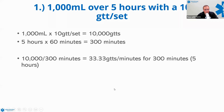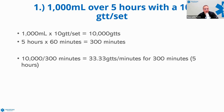Now, 33.33 drops per minute is not incredibly feasible, but that's the math. We cannot give 0.33 of a drop, so we either need to round up or round down when we come up with a decimal. In this case, 33.33 — since it is less than 33.5 — we round down. Anything above 0.5 rounds up; anything below 0.5 rounds down. So we give 33 drops per minute for 300 minutes to deliver our 1,000 mL over five hours with a 10-drop set.